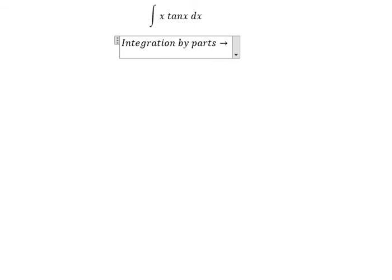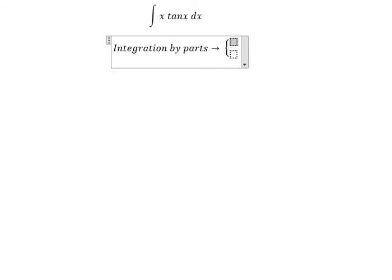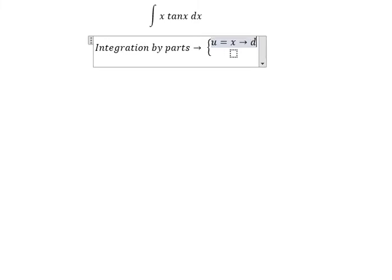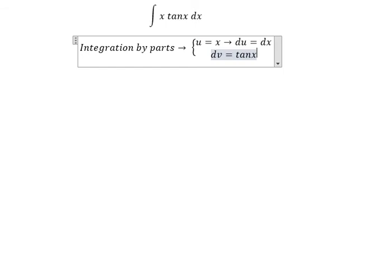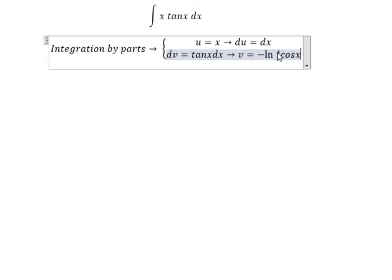So we have u and dv. u equals x, so we get du equals dx. dv equals tan x dx. So we get v equals negative ln of absolute value of cosine x.